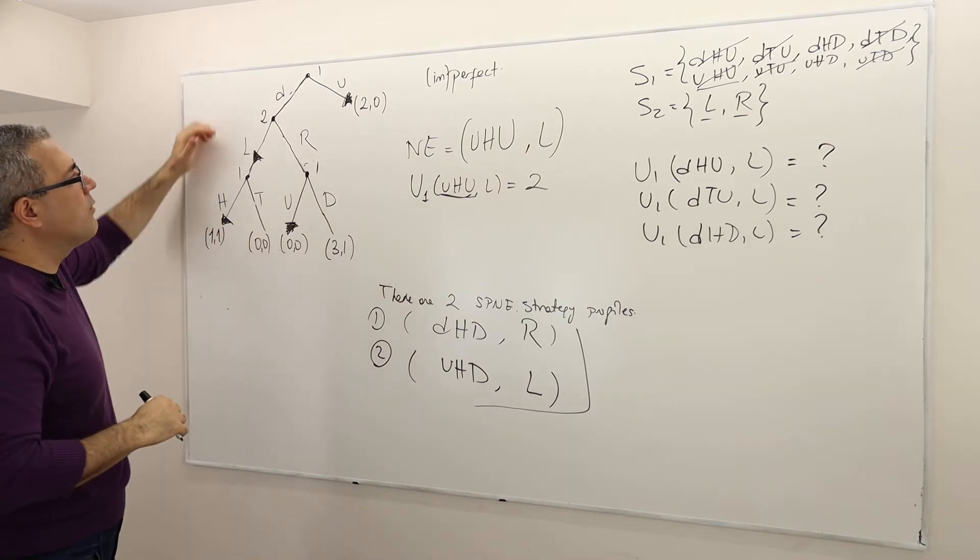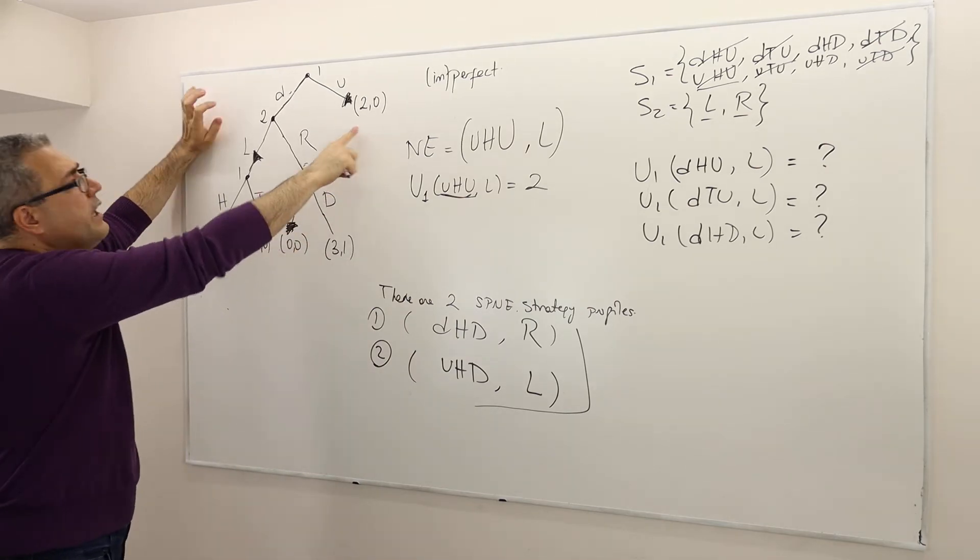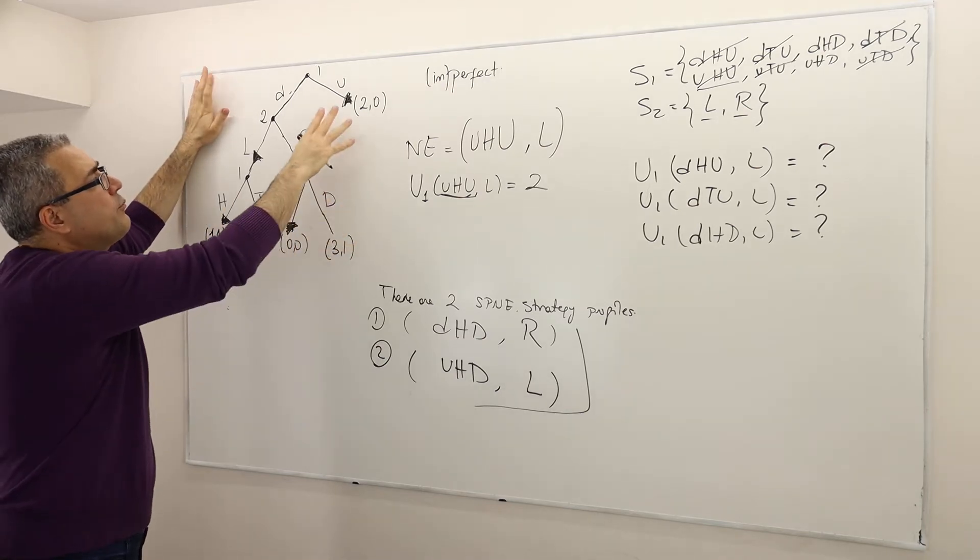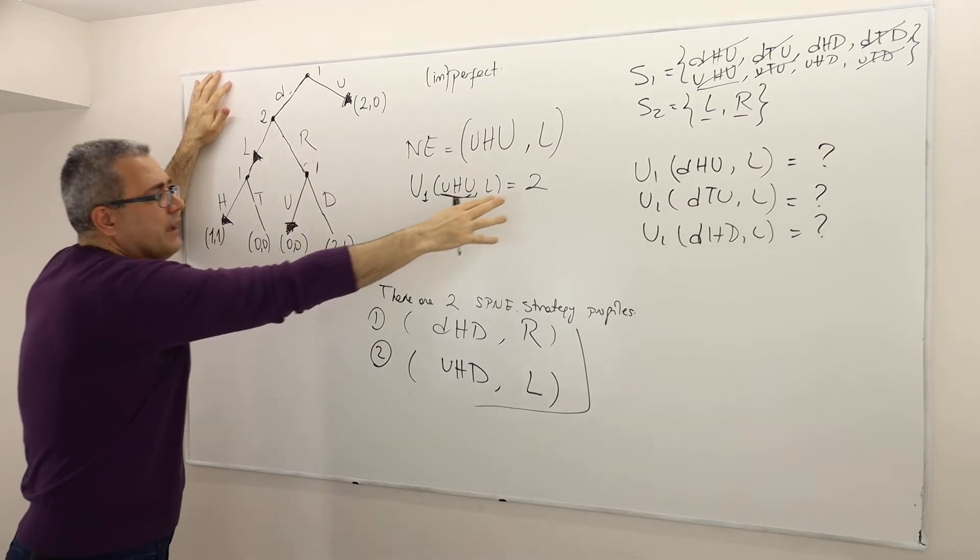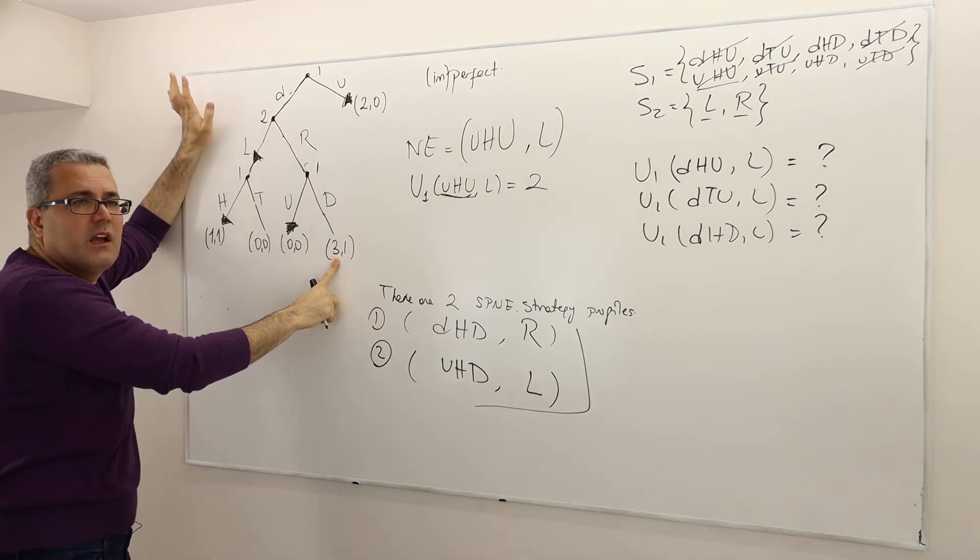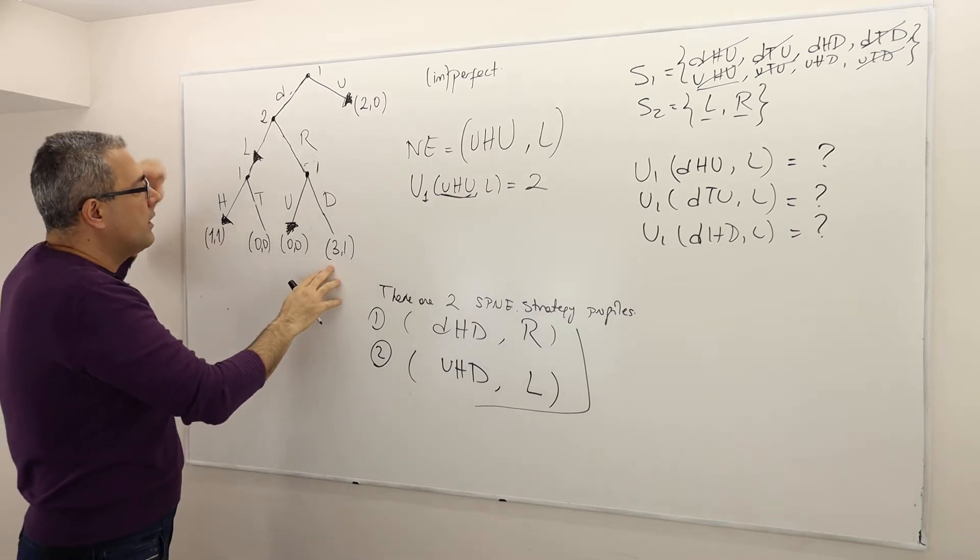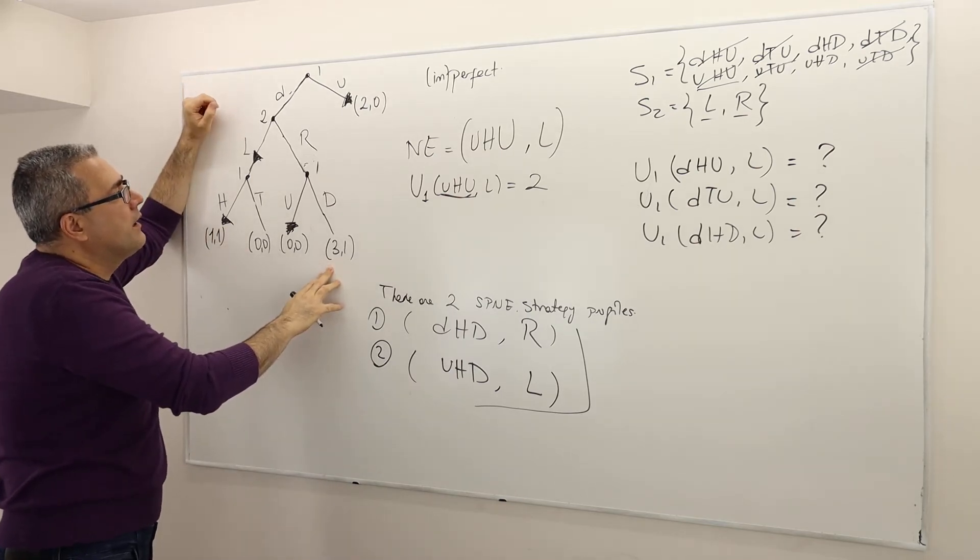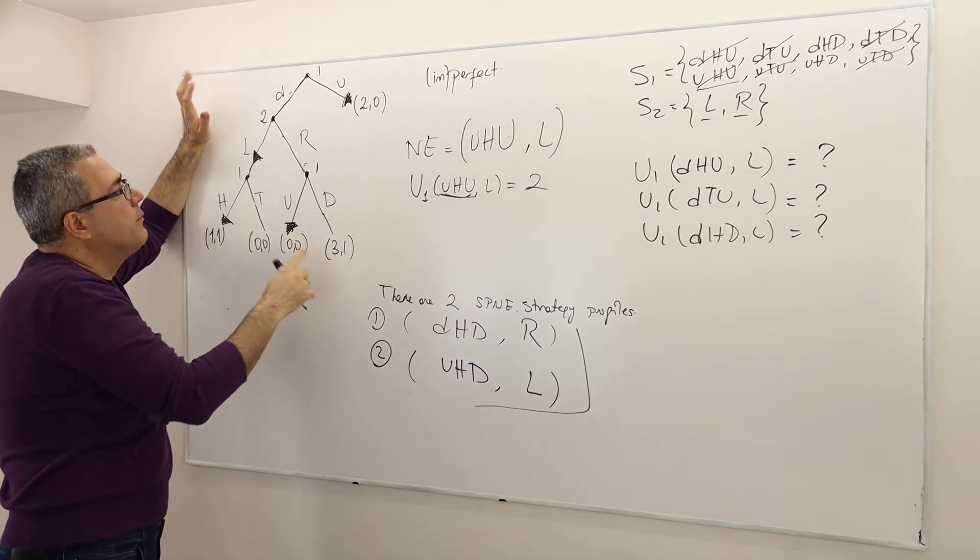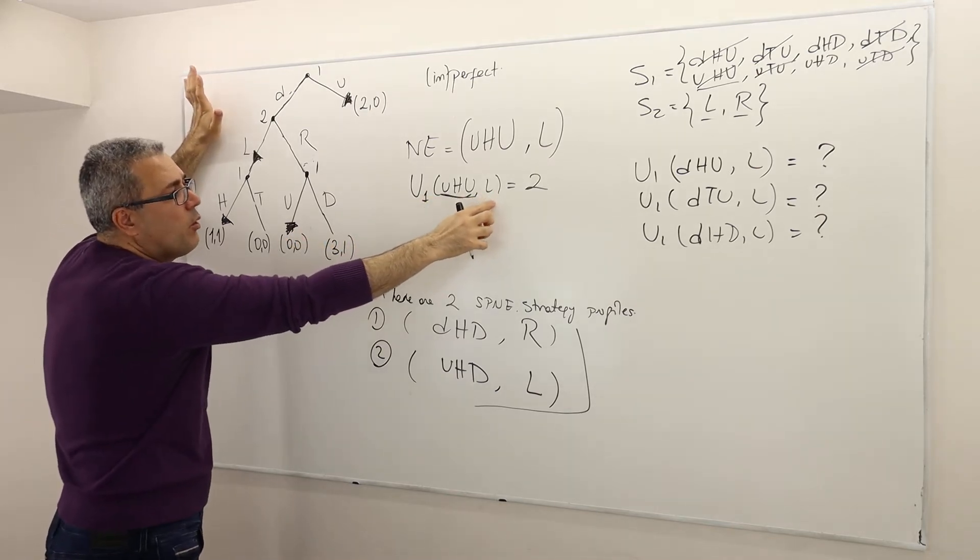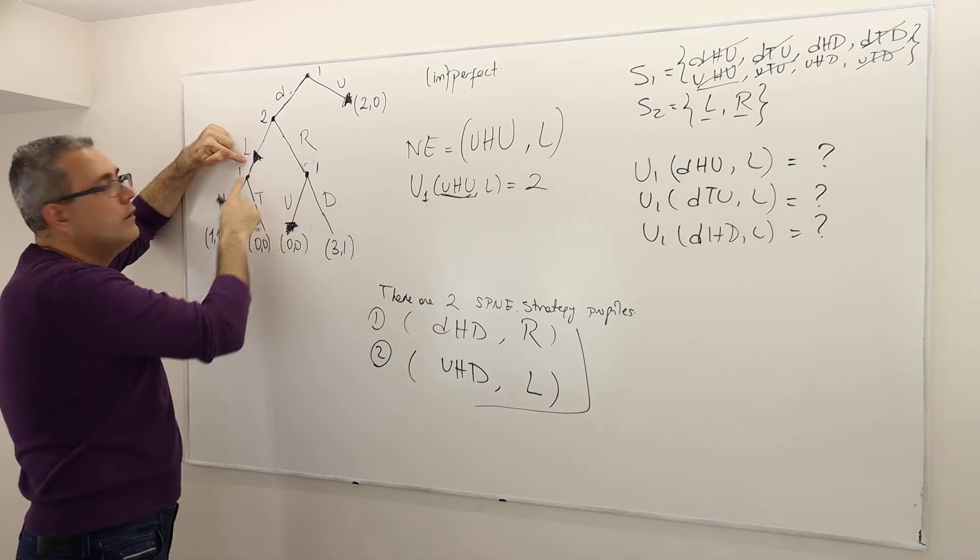But there's a smarter way. How so? Well, there's only one way, one payoff that would bring player one higher payoff than two, which is three, right? Again, we are looking only pure strategies. So therefore, player one, I mean, he can get three. But the question is, can he get three, given that his opponent is playing left? No way.